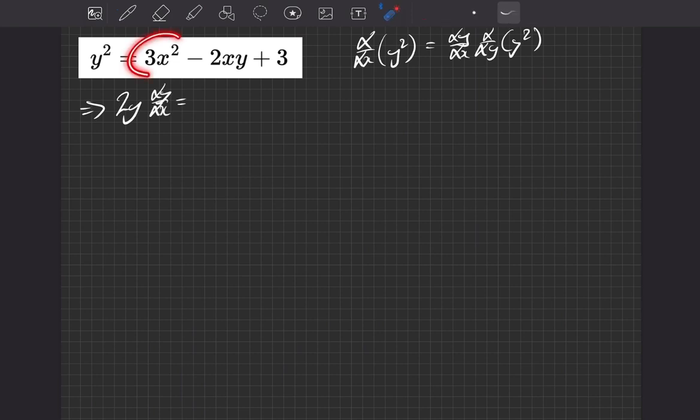For the 3x squared, this is nothing different to normal differentiation, considering we're doing implicit here. So this has become 6x.